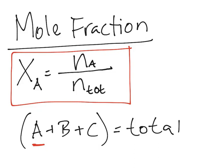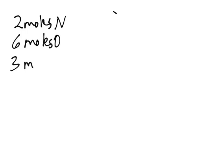So let's do a quick problem. You have a mixture of nitrogen, oxygen, and hydrogen. And it says that you have 2 moles of nitrogen, 6 moles of oxygen, and 3 moles of hydrogen.